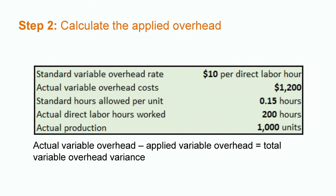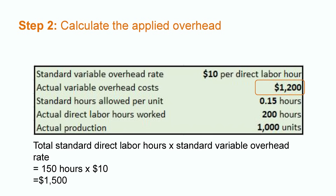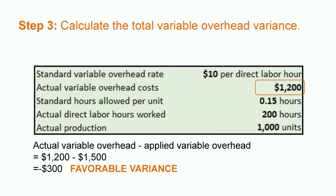Step 2 will be to calculate the applied overhead, and then we'll compute the total variable overhead variance. The formula is: actual variable overhead minus applied variable overhead equals total variable overhead variance. From the image, we know that the actual amount the company spent on variable overhead this period was $1,200. To calculate the applied variable overhead, we take the total standard direct labor hours of 150 hours and multiply by the standard variable overhead rate of $10 per hour, giving us $1,500. Taking the difference between actual variable overhead of $1,200 and applied variable overhead of $1,500 equals $300. Since the company spent $300 less than they planned, they would have a favorable variance.